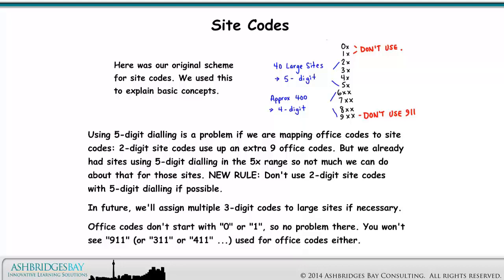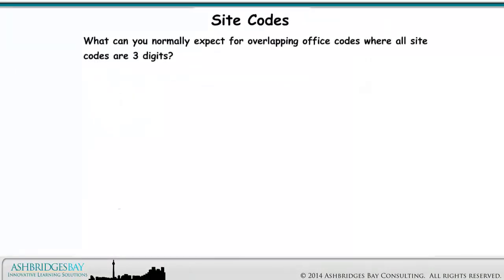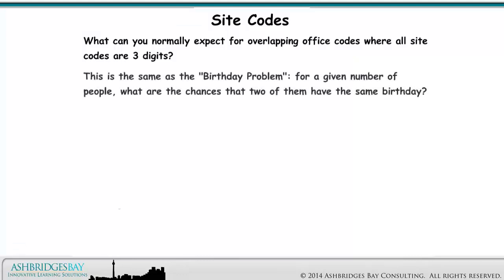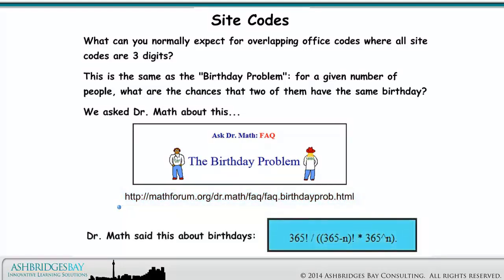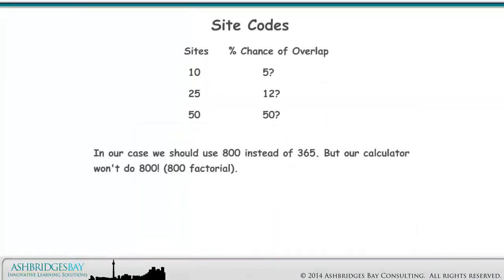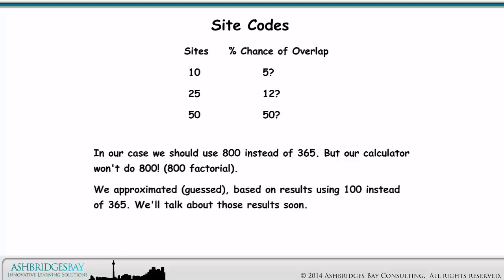Office codes don't start with 0 or 1, so no problem there. You won't see 9-1-1, 3-1-1, or 4-1-1 used for office codes either. What can you normally expect for overlapping office codes where all site codes are 3 digits? This is the same as the birthday problem — for a given number of people, what are the chances that two of them have the same birthday? We asked Dr. Math about this. In our case, we should use 800 instead of 365, but our calculator won't do 800 factorial. We approximated based on results using 100 instead of 365.